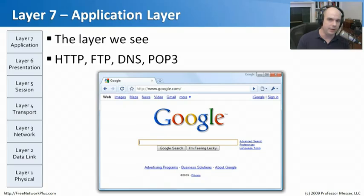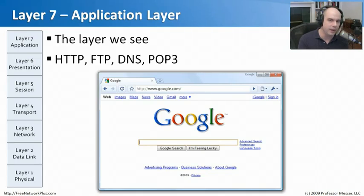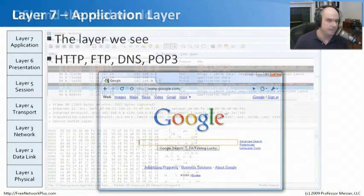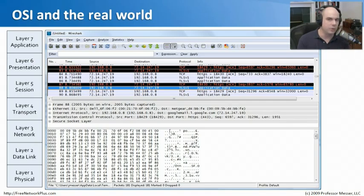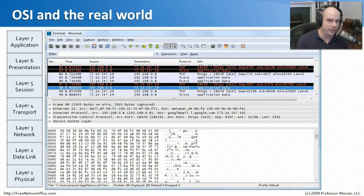Layer seven of the OSI model is the application layer — the layer that we as human beings get to actually see. Layer one, the physical layer, is the layer we could touch; layer seven is finally the piece that comes onto our screen where we can look at the application that's running. That might be a browser, a file transfer program, or checking your mail. This is the final piece to get that application through the network. As you go through your Network Plus certification, you should consider loading up Wireshark, a packet capturing program, to capture your own packets and look at what's really happening behind the scenes.